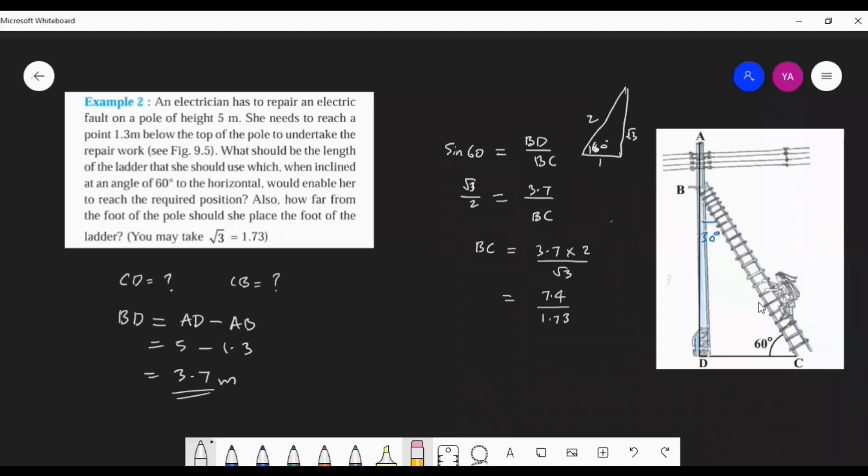1.73 you can apply here, so you want to divide this. I am not doing now. You can convert, you can remove the decimal point by multiplying 100. 7.4 by 1.73. Yes, 7.4 by 1.73 you will do later. You will get some value and write the unit. Unit is meter here. You will get some value, then there you can stop.